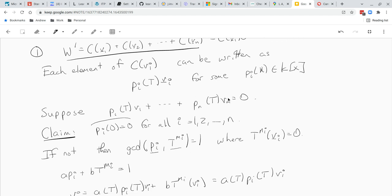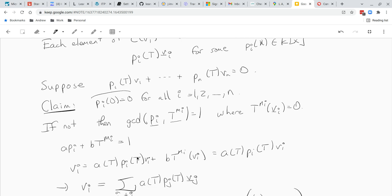And we're assuming that T to the Mi of Vi is zero. Remember, Vi is a cyclic vector so we can do this. And now we're going to use the fact that since they have GCD one, we can find polynomials A and B such that A Pi plus B T to the Mi is one. But what happens? Well then Vi, we can write Vi as we can take this equation and apply it, oh yeah, this is a T and this is the identity.